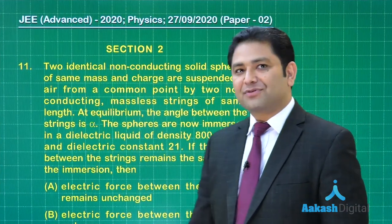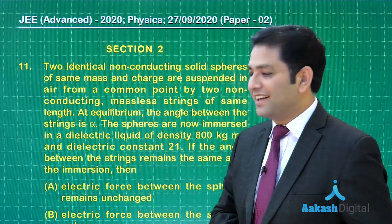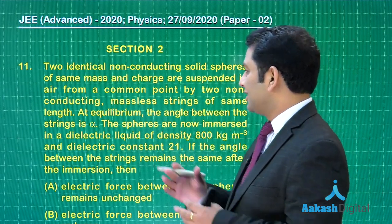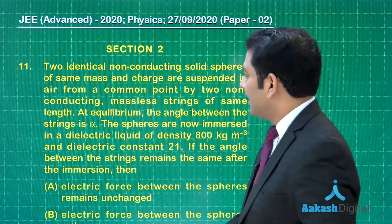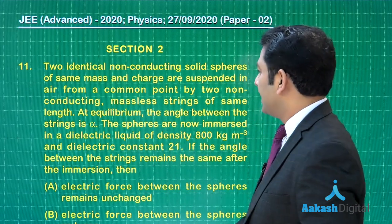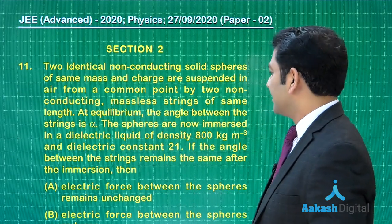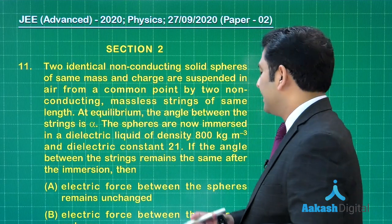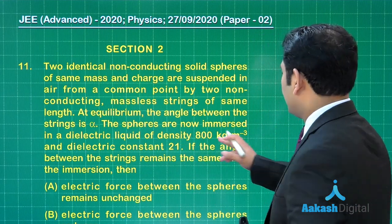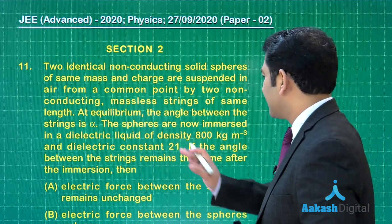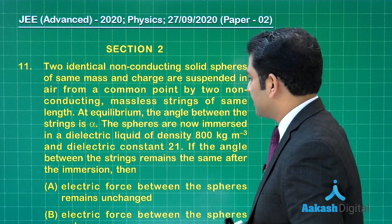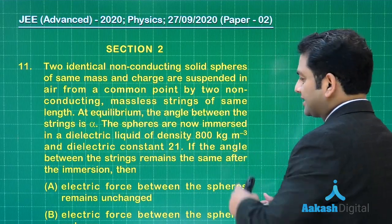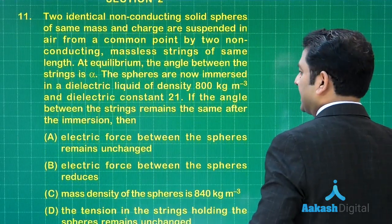Question 11 is from electrostatics with a bit of mechanics. Two identical non-conducting solid spheres with same mass and charge are suspended in air from a common point by two non-conducting threads. At equilibrium, the angle between the strings is alpha. These spheres are now immersed in a dielectric liquid with given density and dielectric constant, and the angle between the strings remains the same after immersion.